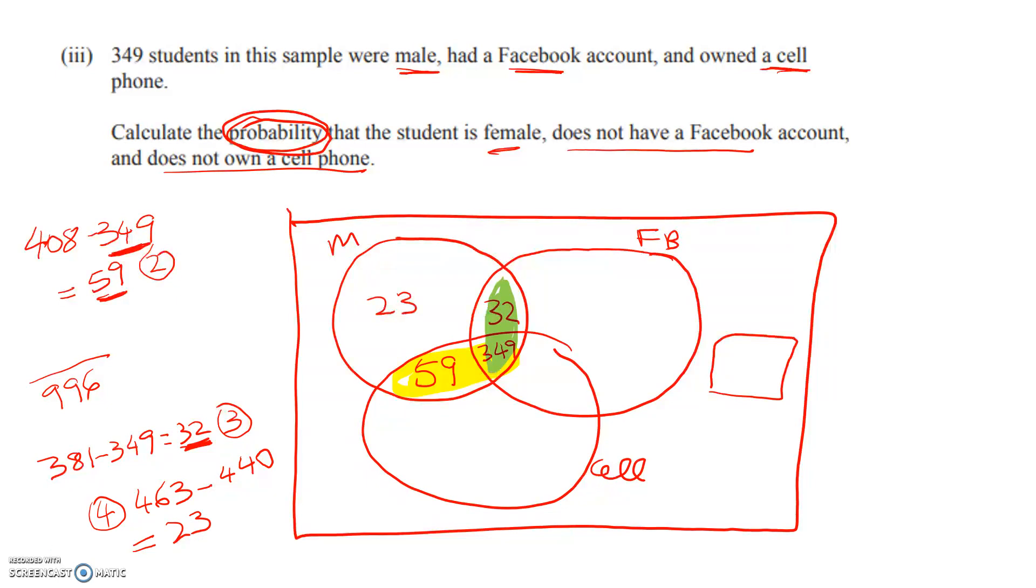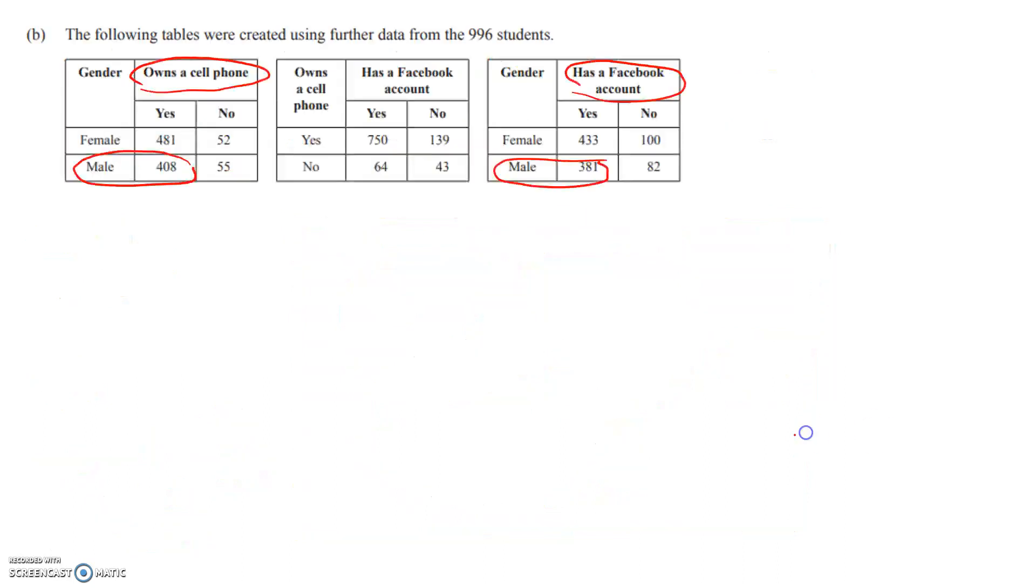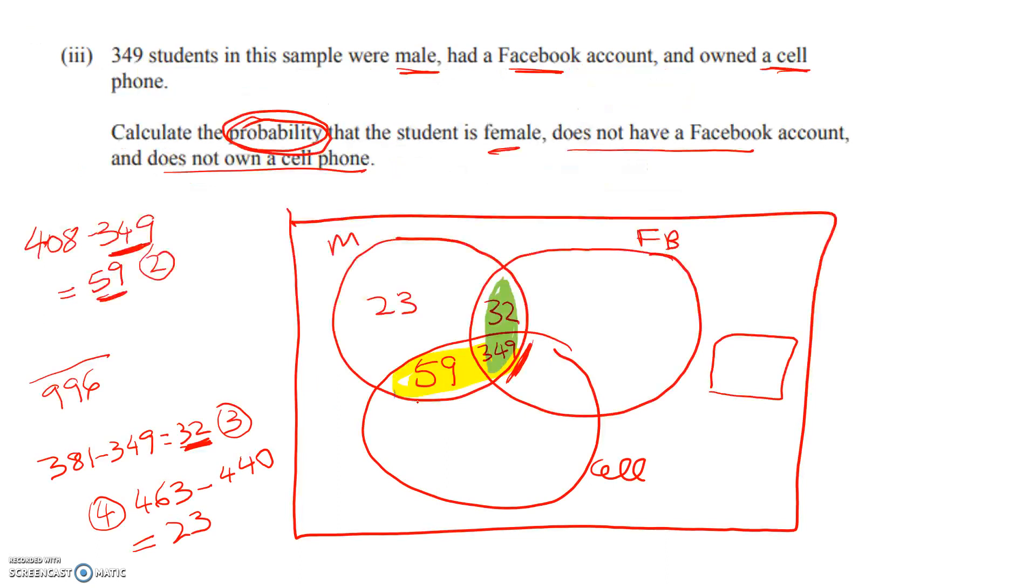Now we've got to move over to the other side of the picture where we're looking at the number of females who have got Facebook and who've got cell phones. We know how many people have got Facebook and a cell phone all together. Facebook and a cell phone is yes and yes, so that's 750.